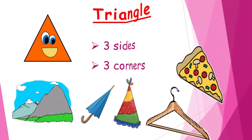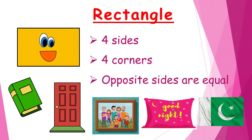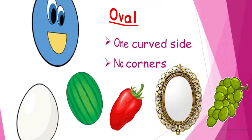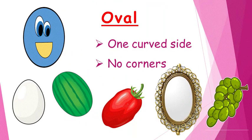Rectangle has four sides and four corners. Its opposite sides are equal. You can find the shape of a rectangle in many things around you, like a book, a door, a photo frame, a pillow, a flag, etc.